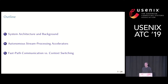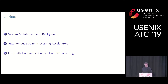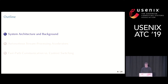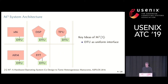The rest of the talk is structured as follows. I will start with background on M3, then show how we can use the fast path communication already provided by M3 to run accelerators autonomously, and finally show how we can combine this fast path communication with context switching.